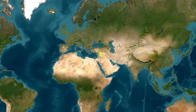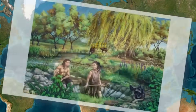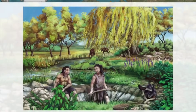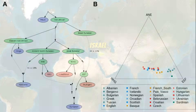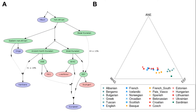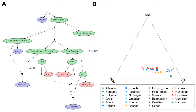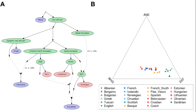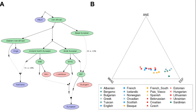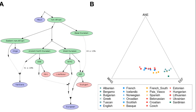Recent studies identified approximately 35% Basal-Eurasian ancestry in pre-pottery Neolithic populations from the Levant, confirming their role as early carriers of this genetic component. Present-day Europeans derive approximately 13–40% of their ancestry from Basal-Eurasians, with a north-south gradient.